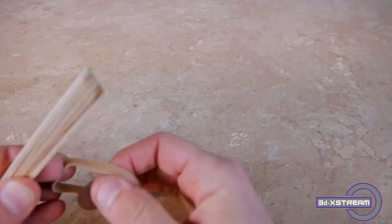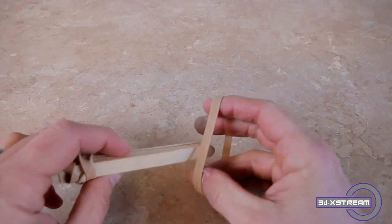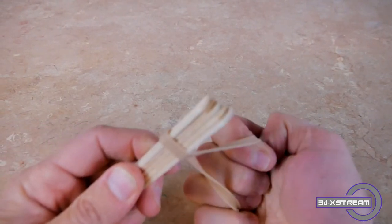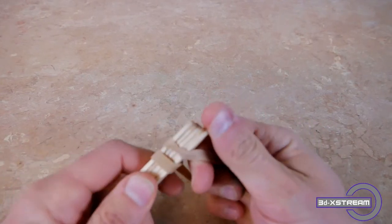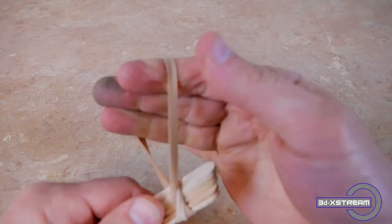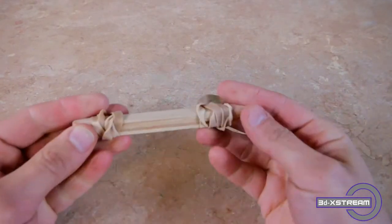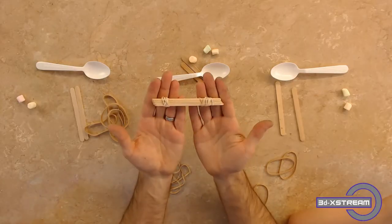Now we're going to do the other end. We're going to do the same thing. Rubber band, twist, however you can do it. Keep doing it until it's tight. What you want it to look like in the end is that.